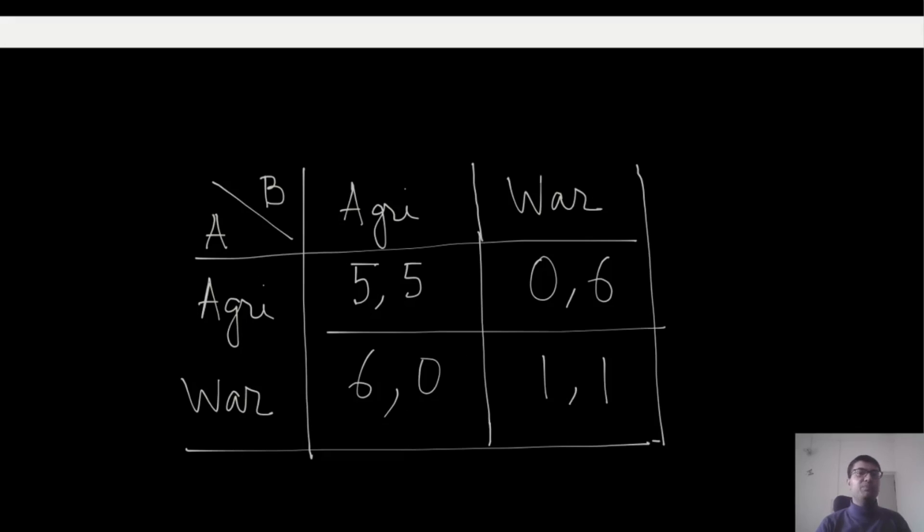We can represent this situation in the form of a matrix. On the rows we are going to represent the two possible options that kingdom A has: one is agriculture, the other is war. Similarly, on the columns we represent the two possibilities, which are the possible actions for kingdom B. In each of these cells, what we are going to write is essentially a couple of two numbers. The first number represents the payoff of player A, and the second is the payoff of player B. These numbers represent how happy they are—the higher these numbers are, the more happy this kingdom will be.